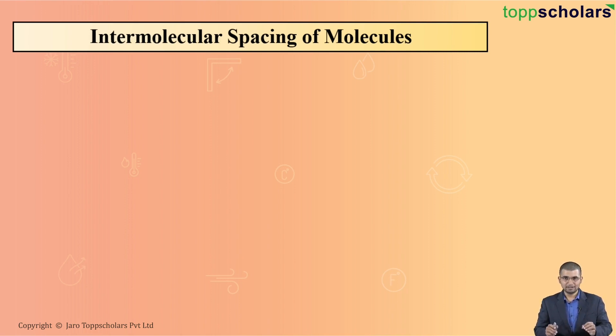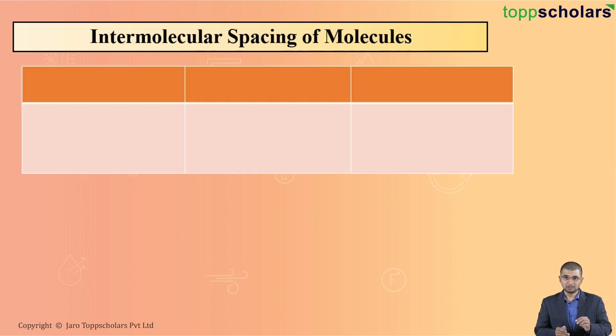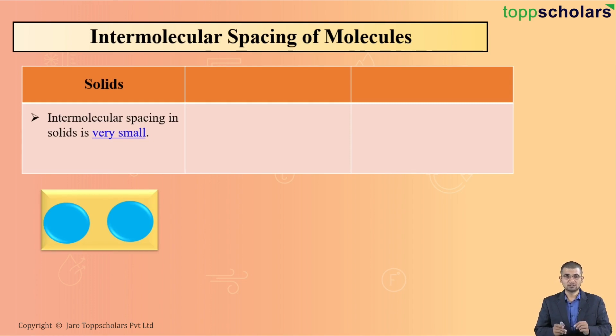It is simply spacing between two molecules. Now, this spacing in solids is very, very small. As you can see in the diagram, if you consider two solid molecules, the spacing between them is less.